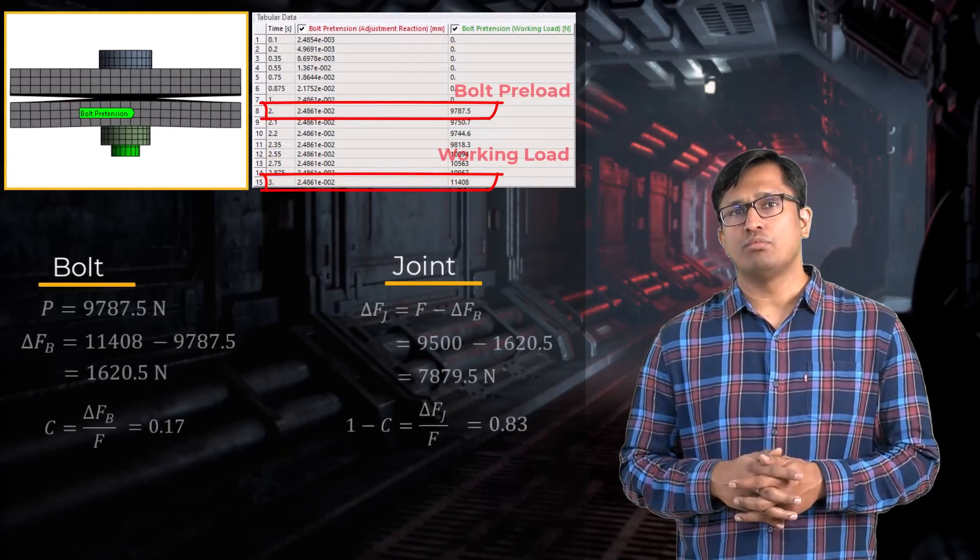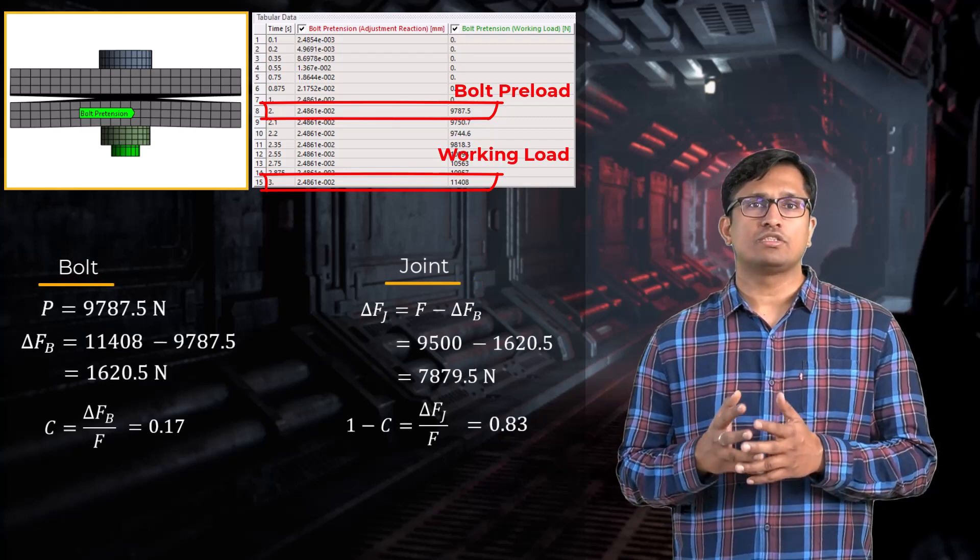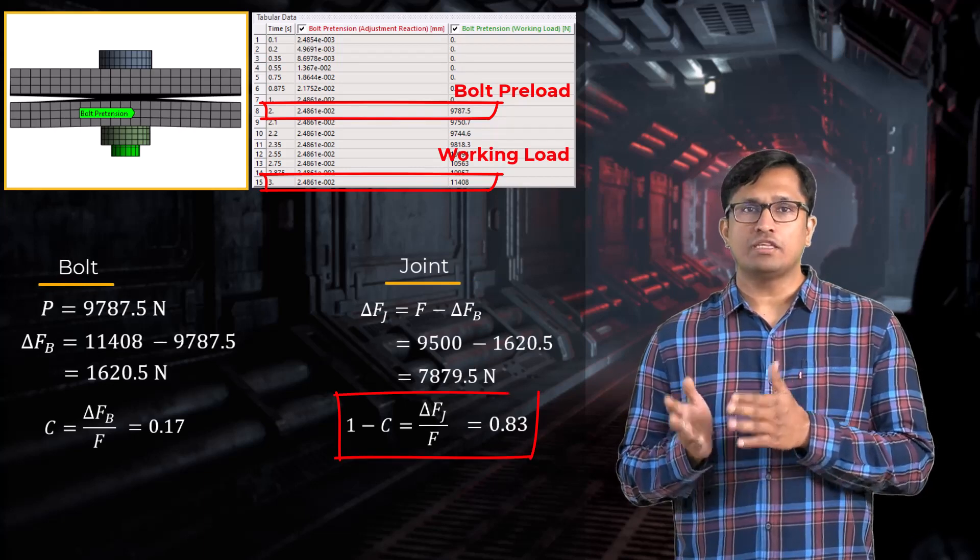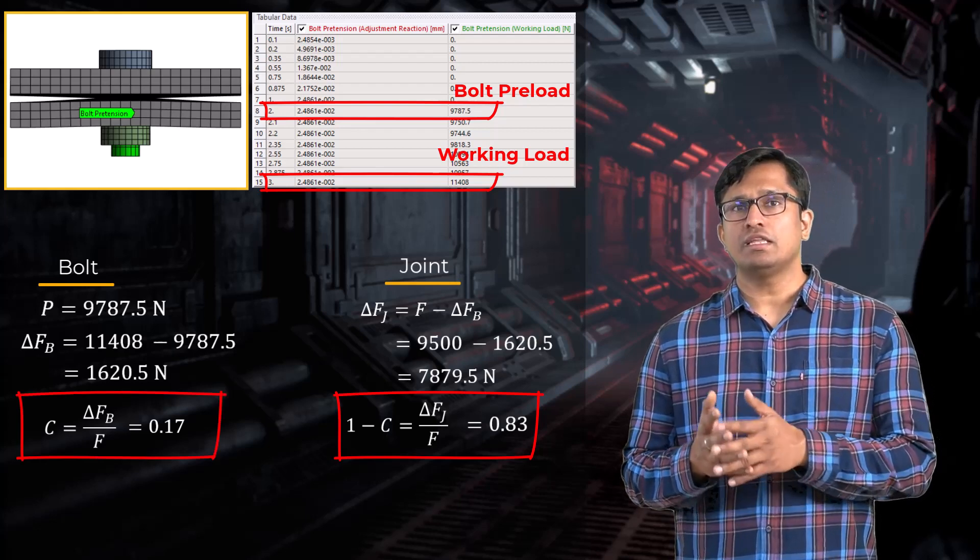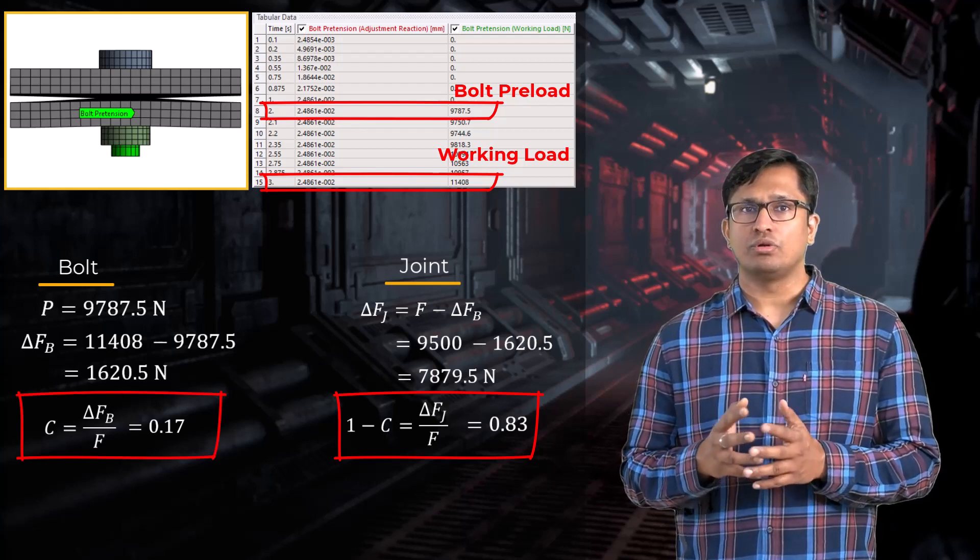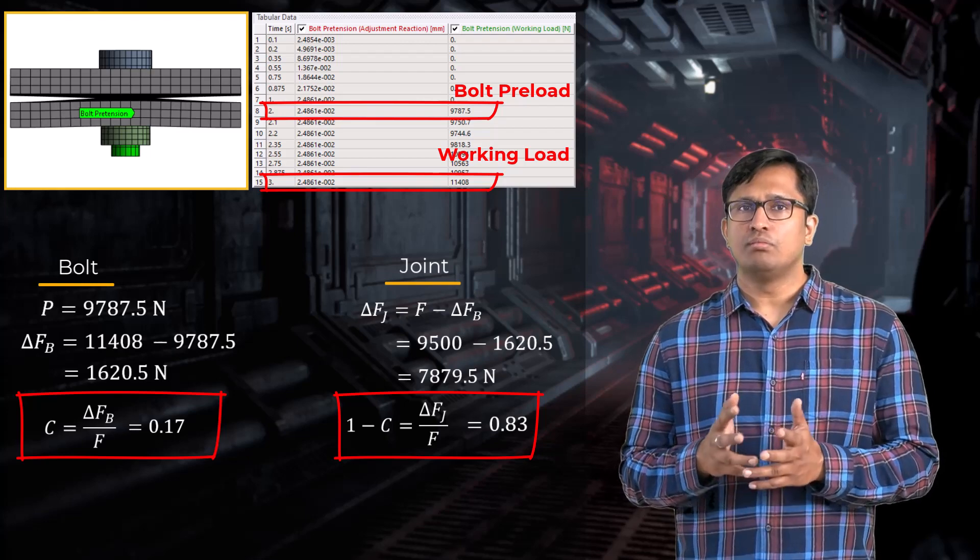Turning to our simulation model, we in fact see that most of the external force was carried by the joint while only a small percentage of it resulted in an increase of the working load or total force in the bolt.